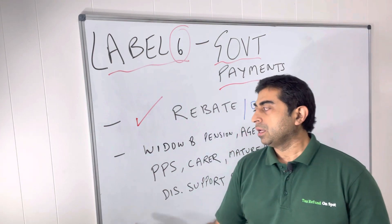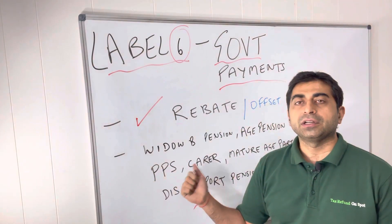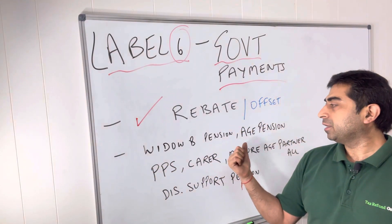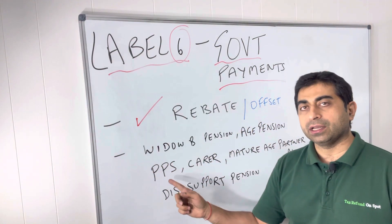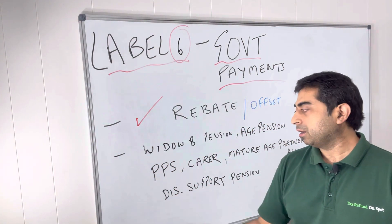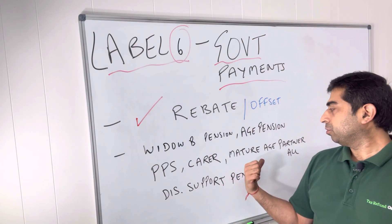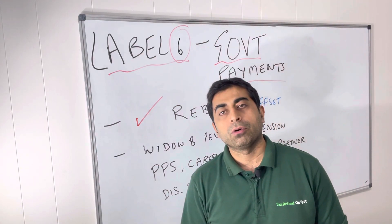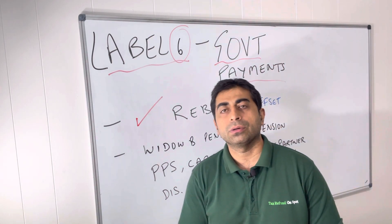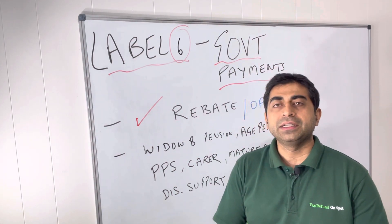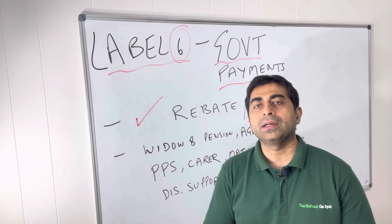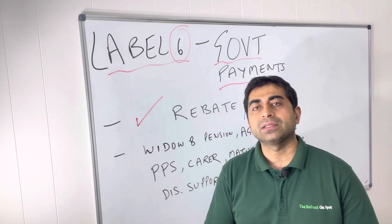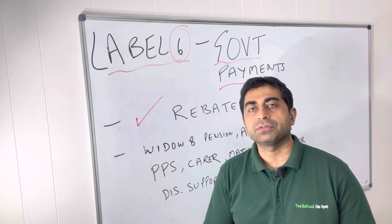Now, what kind of payments receive tax credits? I have listed a few of them: widow B pension, age pension, parenting payment single (not partnered), carer pension, mature age partner allowance, and disability support pension. There are some other payments also, but these are the basic and very common payments which need to be entered at level six.